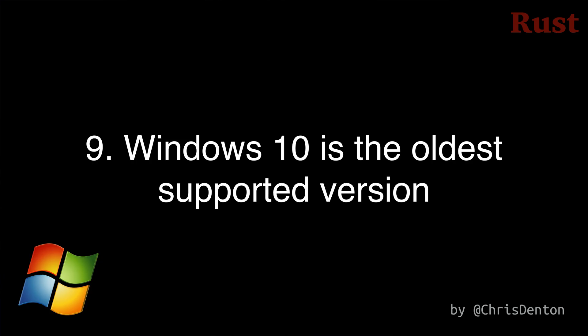Number 9: As warned in a previous video, Rust 1.78 dropped support for Windows versions older than Windows 10 for certain Tier 1 targets. There are lower tier targets that still support older versions of Windows if you need that.